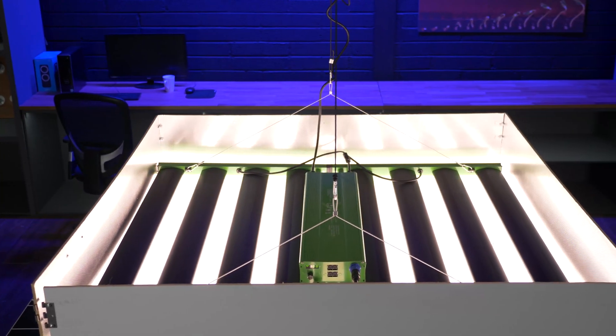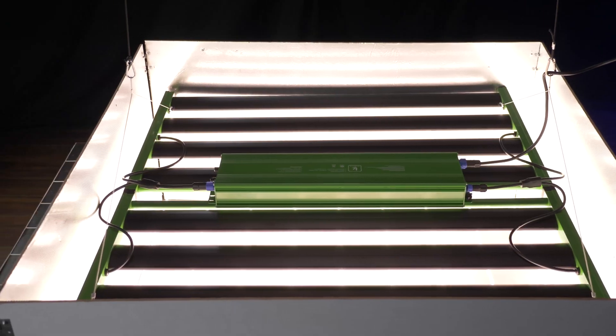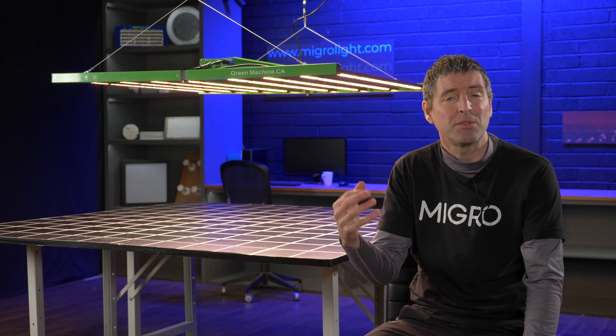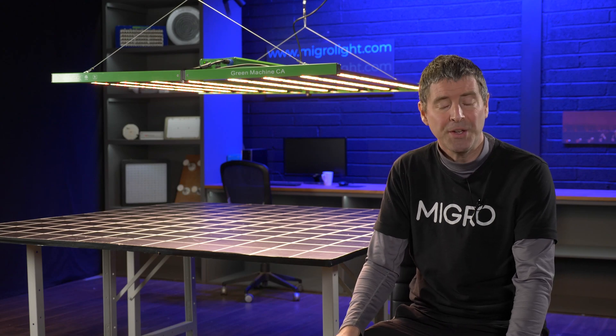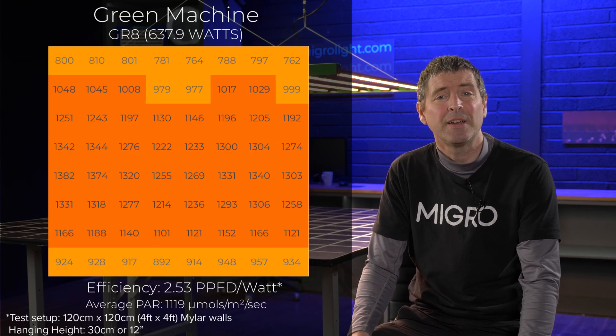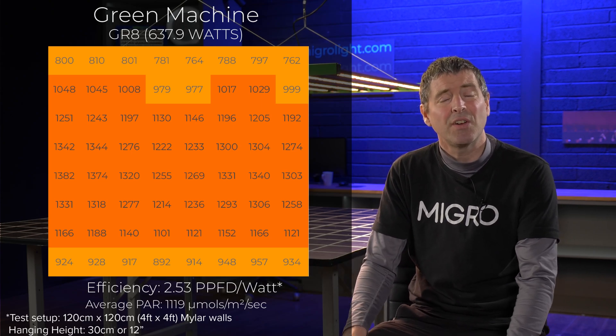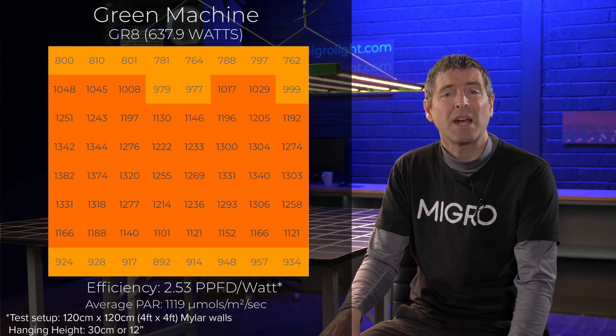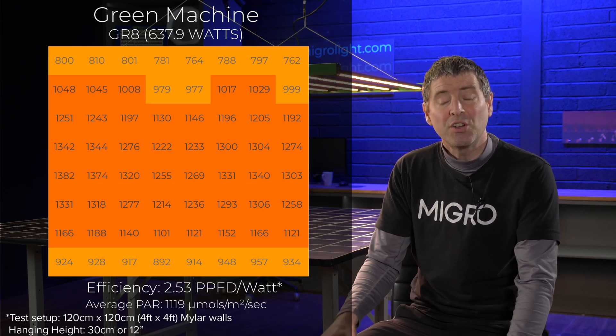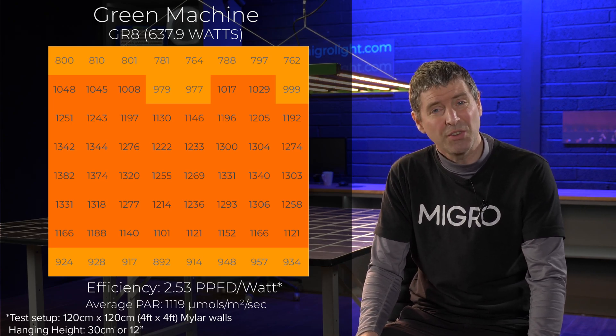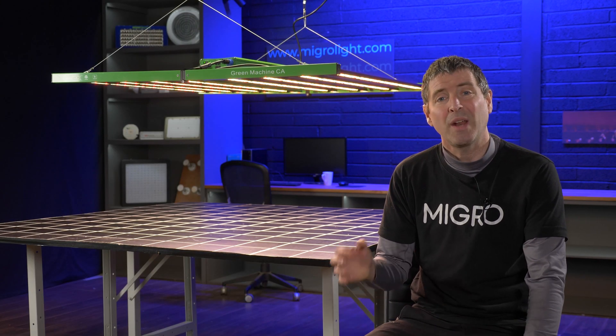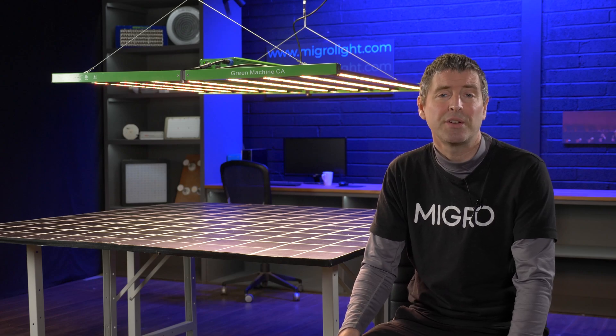So I put it into a four by four to start and for this setup, you would definitely need CO2 supplementation because it brings the average power up very high. I hung it at 12 inches or 30 centimeters hanging height. As you can see, it gave a good even spread with an average power of about 1100 micromoles, and a really good system efficiency of 2.53 micromoles per watt. So an excellent high performance setup there in a four by four.